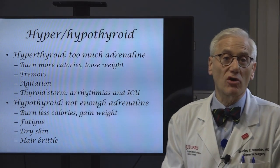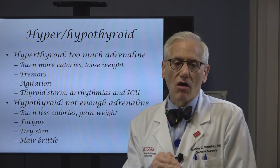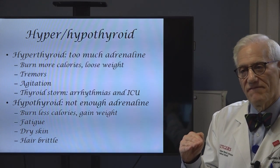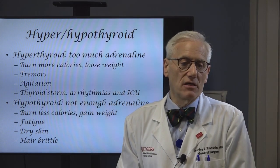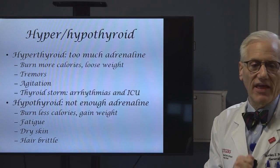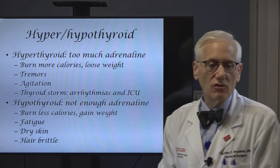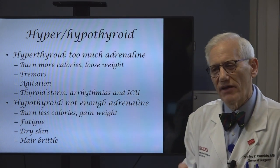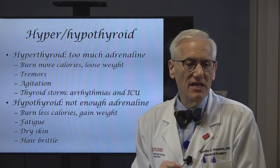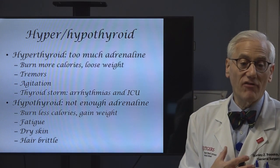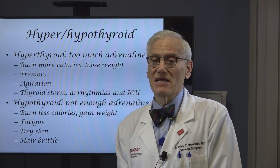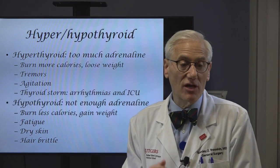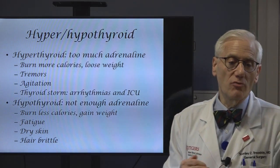When people have too much thyroid hormone in the blood, it's like they always are on an adrenaline surge. Even though the adrenaline levels will be normal, the effect of adrenaline is magnified. So when people are hyperthyroid, it's as if they have too much adrenaline effect. They burn more calories, they lose weight, their hands may shake — that's called tremors. They may be more agitated, so they undergo a little bit of a personality transformation. In the extreme, they can have heart rhythm disturbances and wind up in the intensive care unit to get treated for high blood pressure. That's what hyperthyroid is like because there's too much thyroid hormone, too much adrenaline effect.